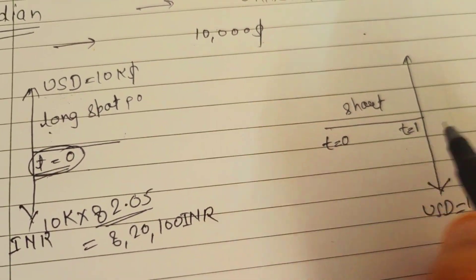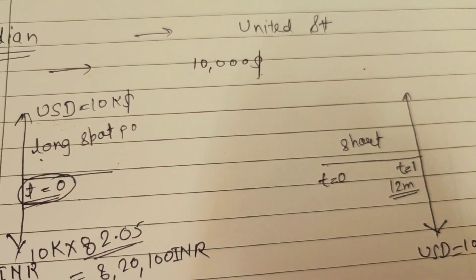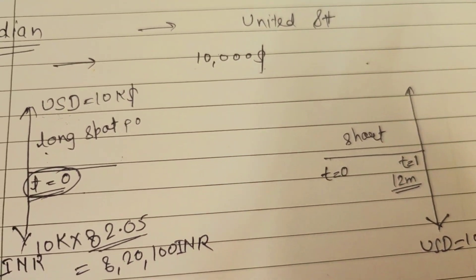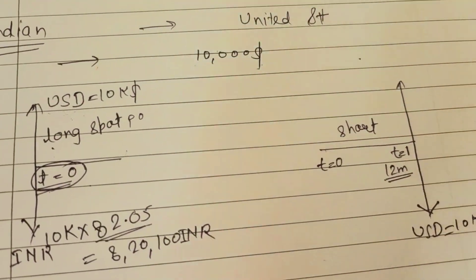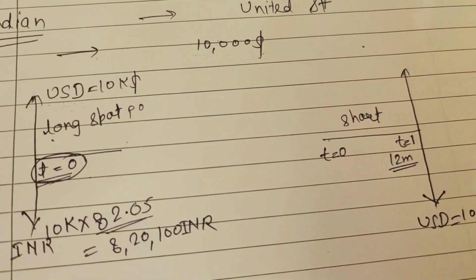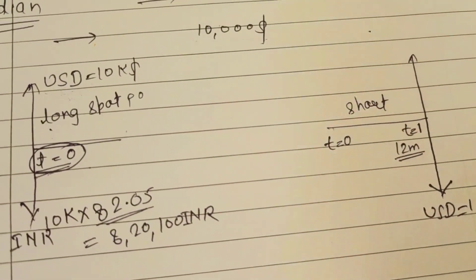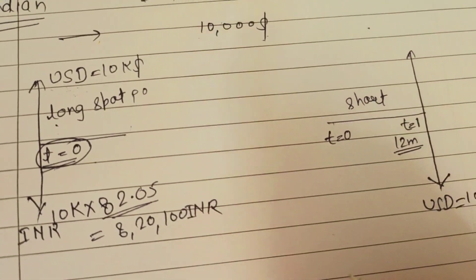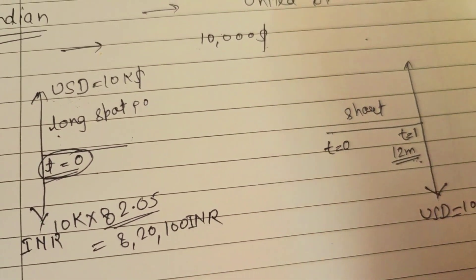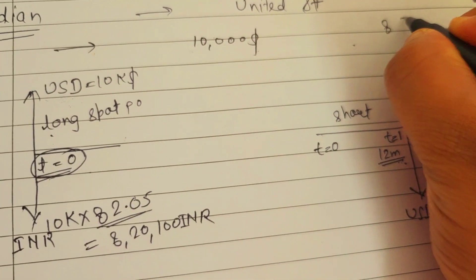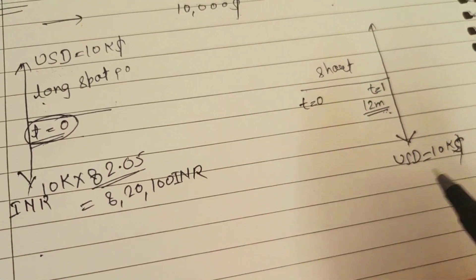This duration is maybe 12 months, and the forward contract rate has changed. This forward rate is calculated based on the spot rate. There are some additions we do to the spot rate and we arrive at a forward rate.